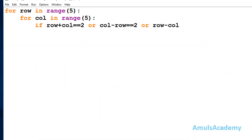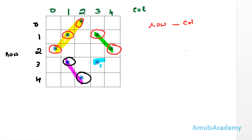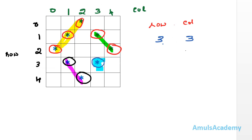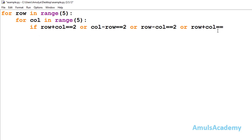One more condition is left — to print the last star at row 3 and column 3. Adding row plus column: 3 plus 3 is 6, so when row plus column equals 6 we print a star. My fourth condition is: row + col == 6. These are my four conditions.